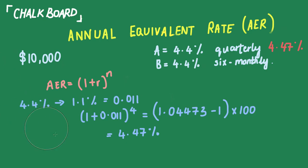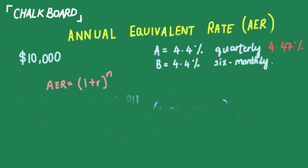Now let's look at Firm B. Same protocol. Firm B is offering 4.4% six-monthly, which roughly equates to 2.2% for every period. Again, convert to decimal form, so divided by 100, you should have 0.022.